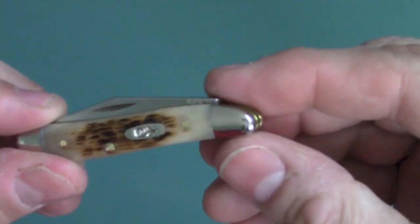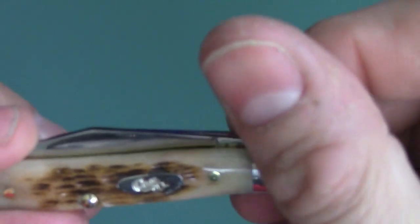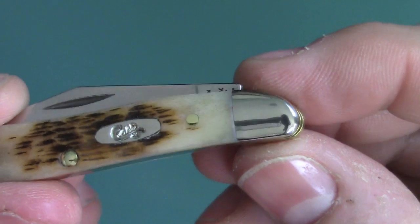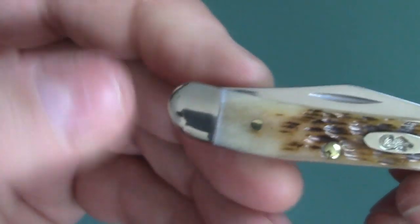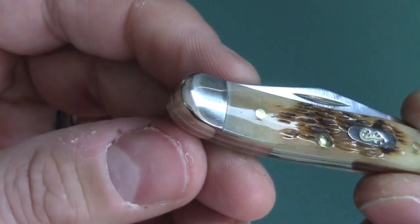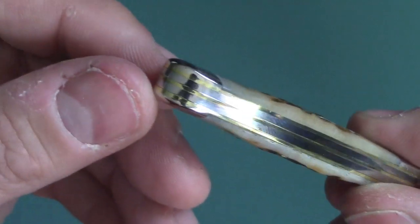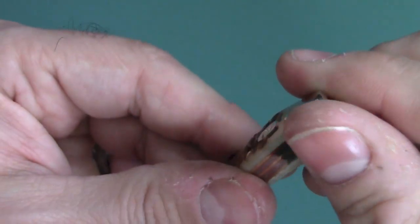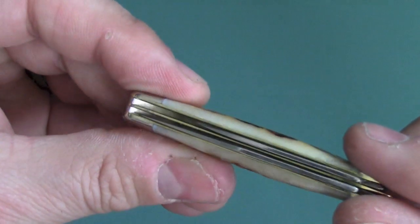Look at these bolsters. These are nickel silver bolsters. Just gorgeous. Just, look at that shine. Look at that shine. Look at those fingerprints. Everything is just polished so nice.